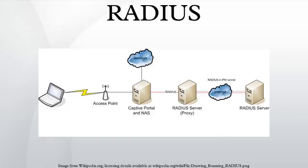The user's proof of identification is verified, along with, optionally, other information related to the request, such as the user's network address or phone number, account status, and specific network service access privileges. Historically, RADIUS servers check the user's information against a locally stored flat file database. Modern RADIUS servers can do this, or can refer to external sources — commonly SQL, Kerberos, LDAP, or Active Directory servers — to verify the user's credentials.